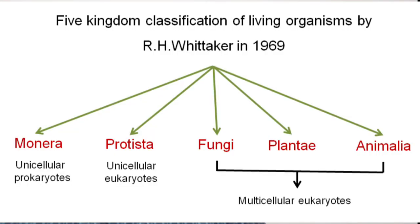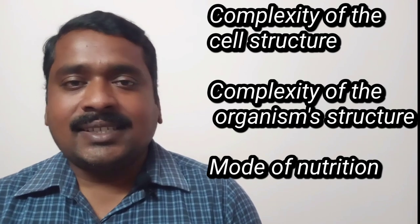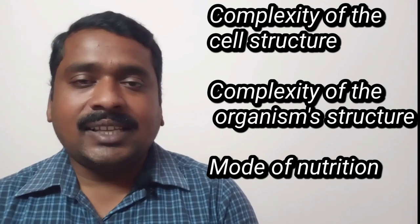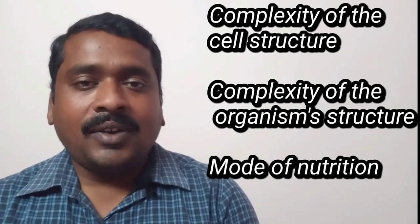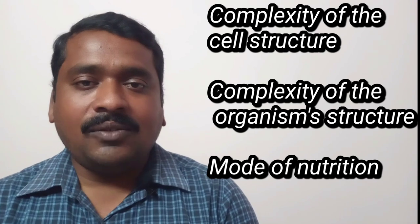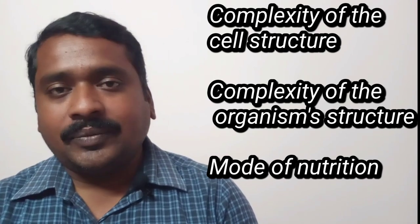According to him, organisms are arranged in five kingdoms: Monera, Protista, Fungi, Plantae, and Animalia. R.H. Whittaker's five kingdom system is based on three factors: first, complexity of cell structure; second, complexity of an organism; and third, mode of nutrition.